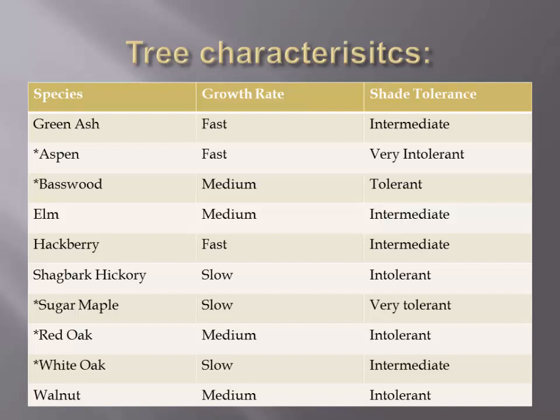Even white oak ultimately needs lots of sunlight to continue its development and recruit upward into a co-dominant or dominant position within the tree canopy. Maple and basswood are quite the opposite — they're shade tolerant. Maple is very shade tolerant, so it doesn't have any problem hanging out in the understory for years and years — maybe 60, 80-plus years — just waiting for a disturbance in the canopy so it can recruit upward.